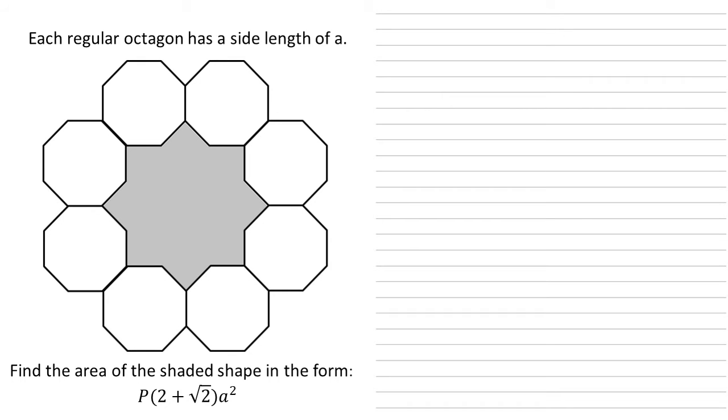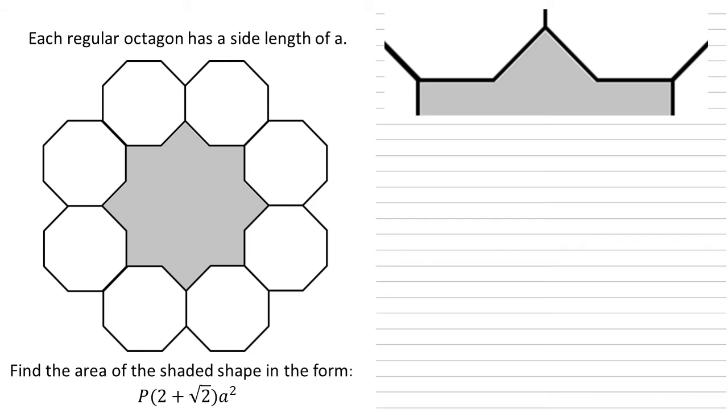So let's zoom in on the top of our shape. Here we go, we know we've got side lengths of a for the octagons so we can label these on here. Each of them is a.